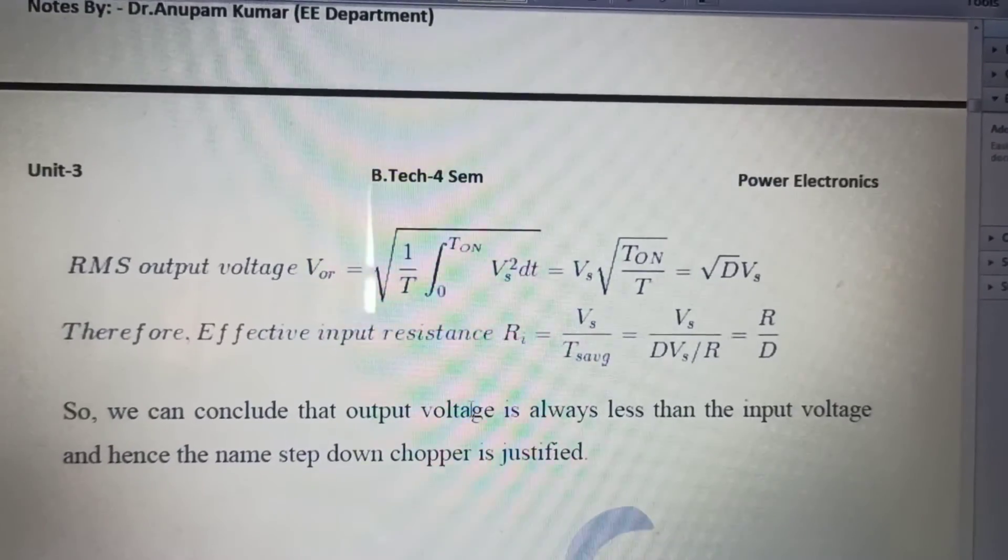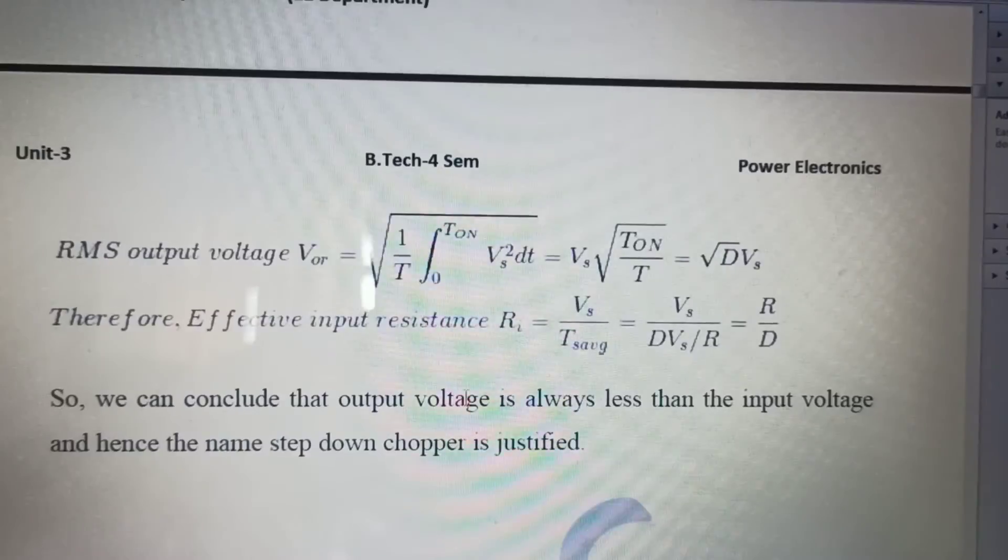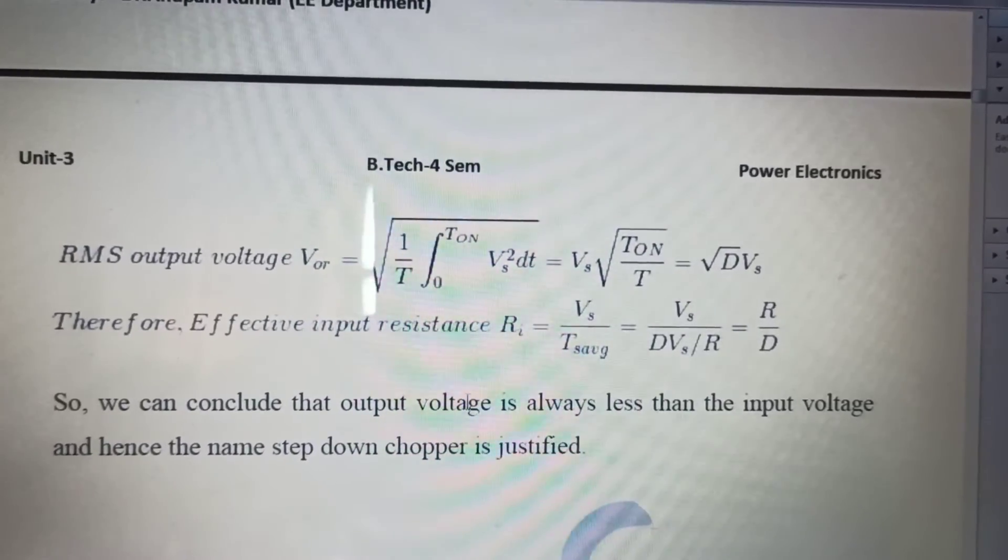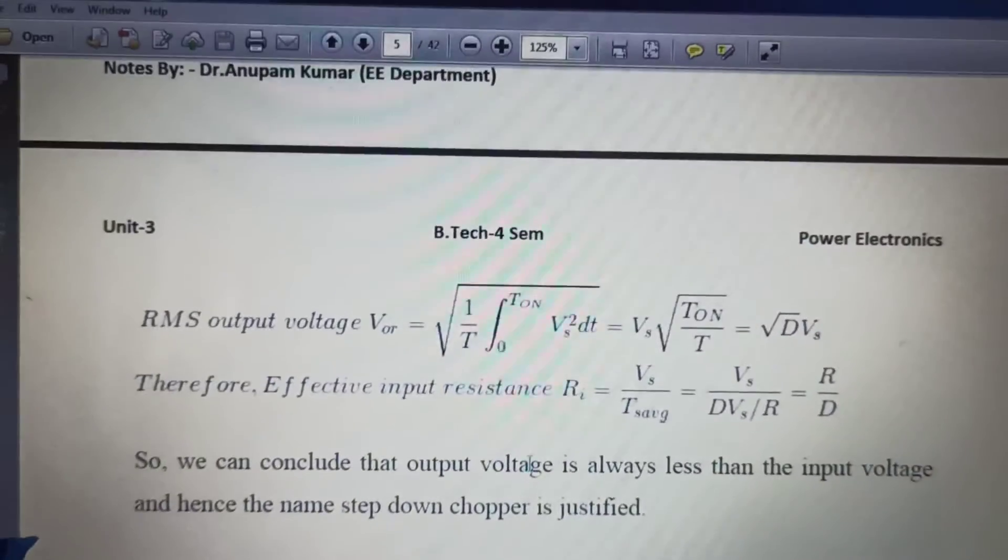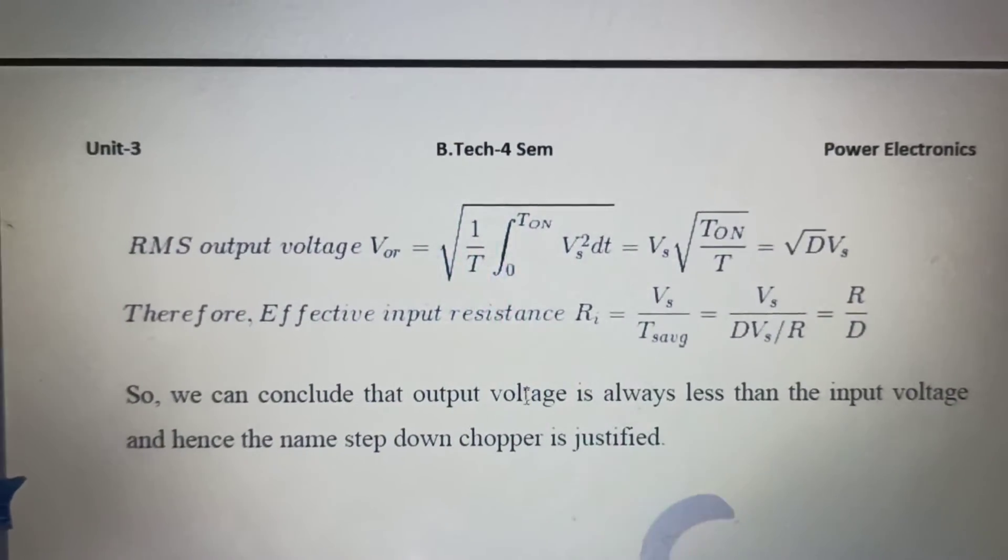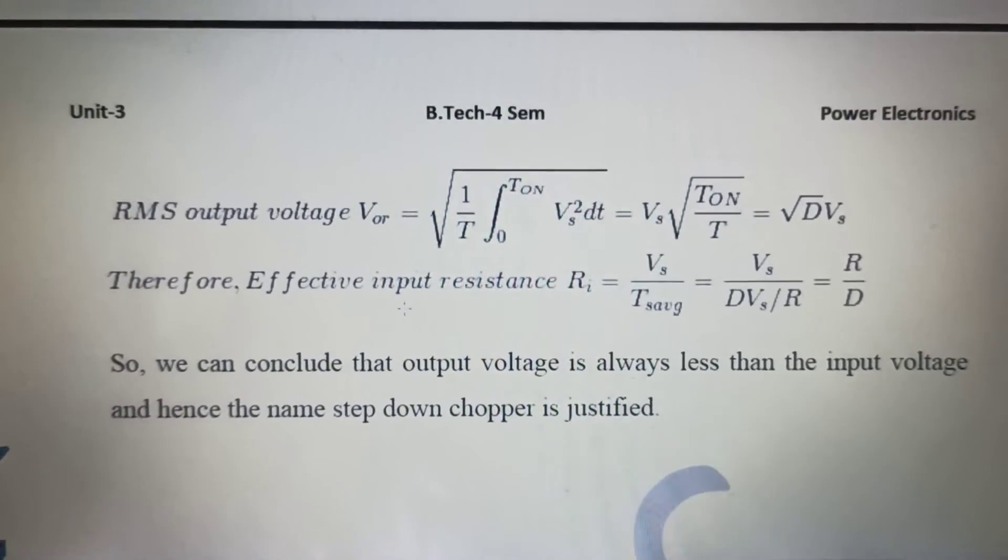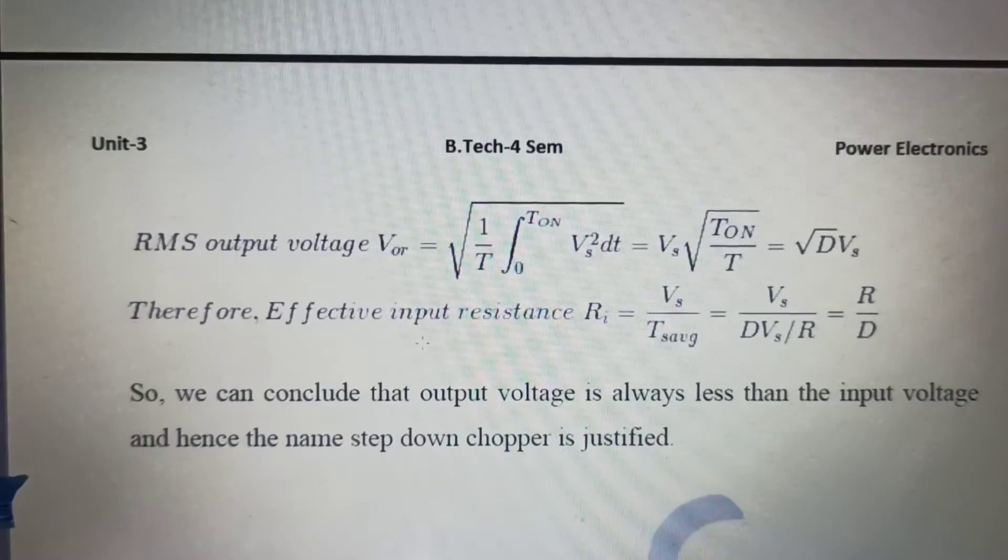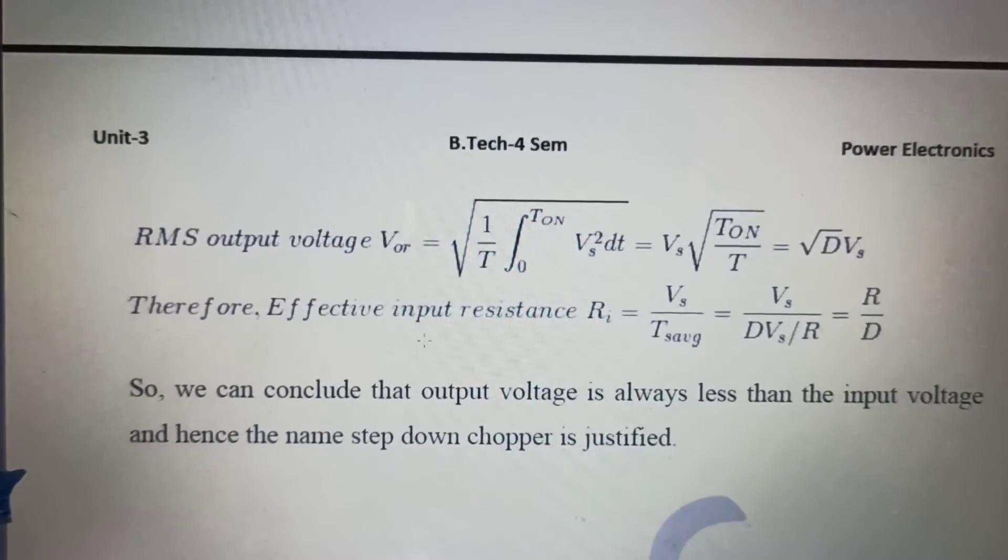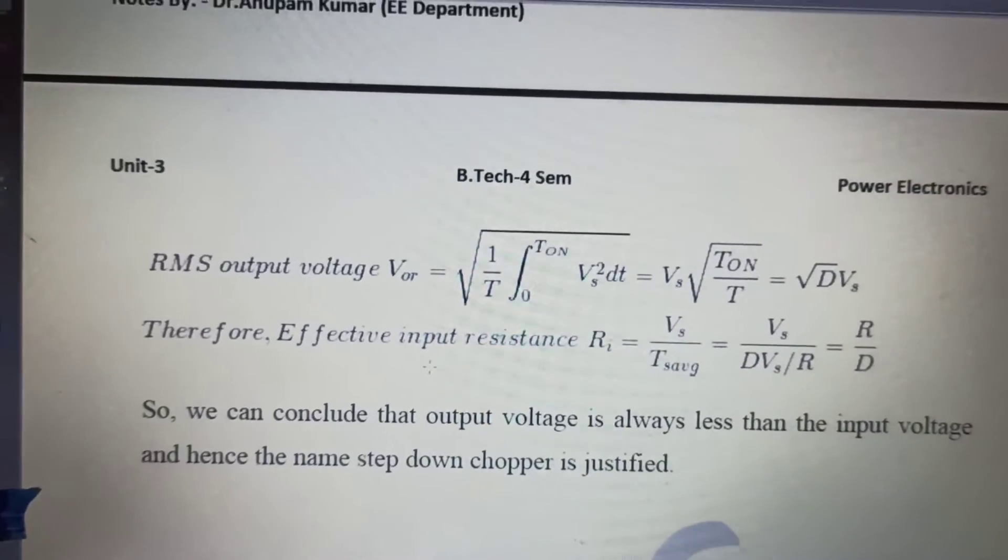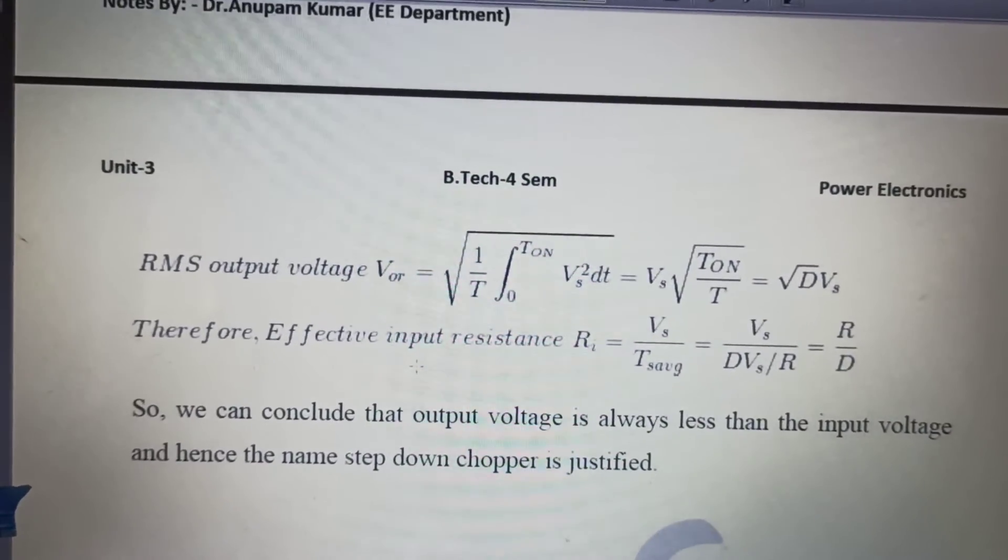Now if somebody asks us what is going to be the effective input resistance, then it is again very easy to answer this problem. We can say it by two parts. First of all we can get the input current, source current. And at source current we will divide the source voltage by source current and we will get the resistance.